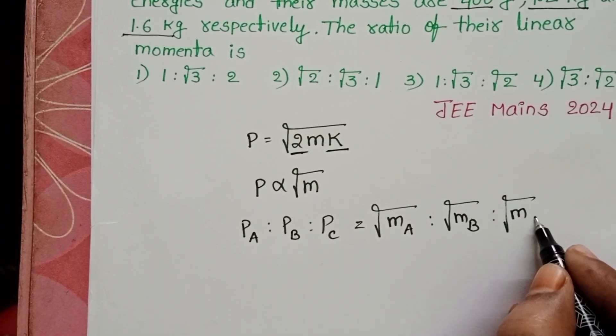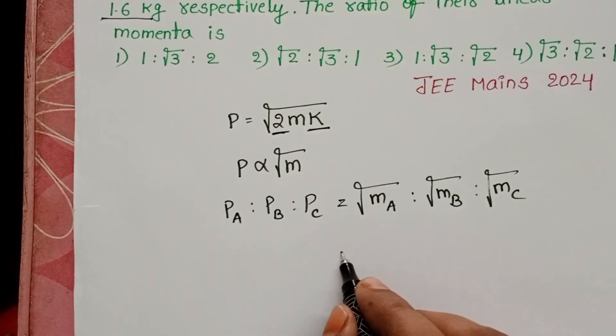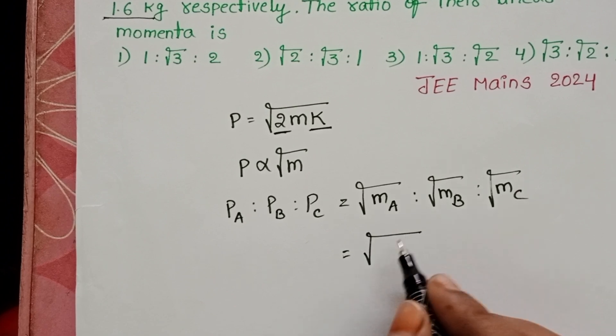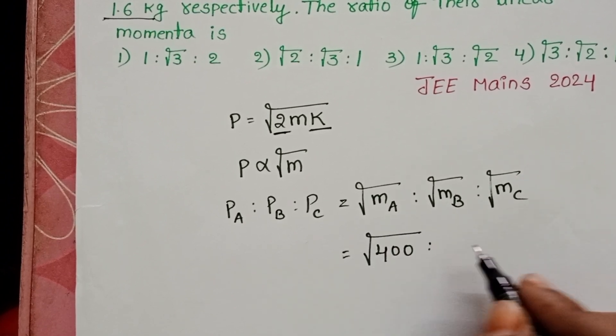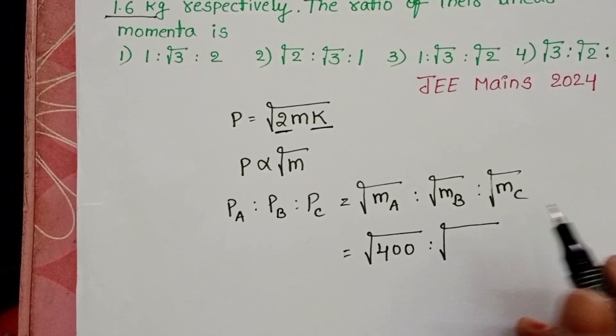equals square root of mass A, square root of mass B, and square root of mass C. First body mass is 400 grams, and now take the mass of the second body also in grams.